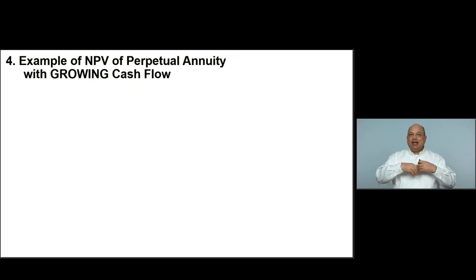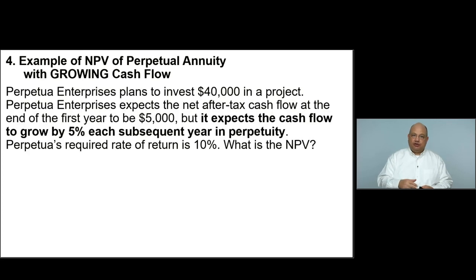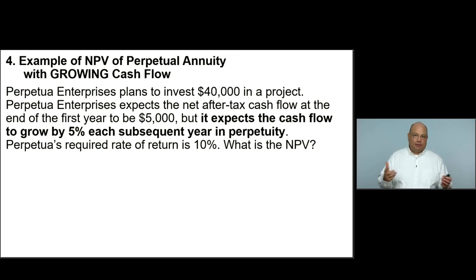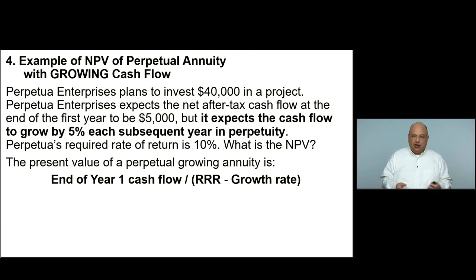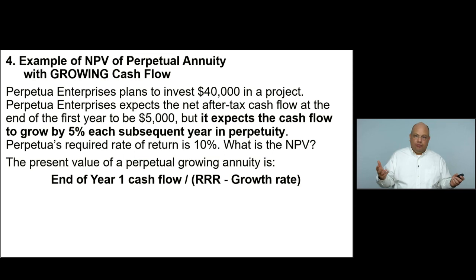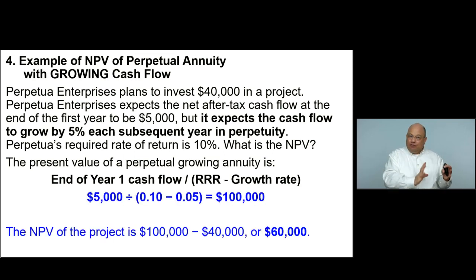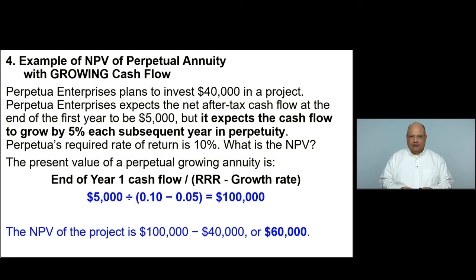For the growing perpetual annuity: Perpetual Enterprises invests $40,000, with an after-tax cash flow of $5,000 at the end of year one, growing at 5% per year forever. The required rate of return is 10%. Using the formula — $5,000 divided by (10% minus 5%) — the present value of those cash inflows is $100,000. Subtracting the $40,000 investment, the net present value is $60,000. With 5% growth, the present value is clearly larger than the constant cash flow scenario.